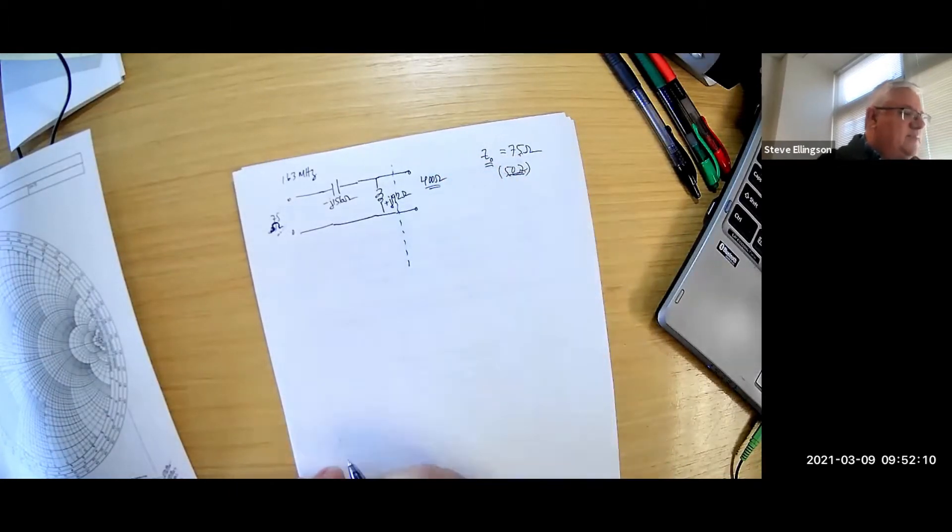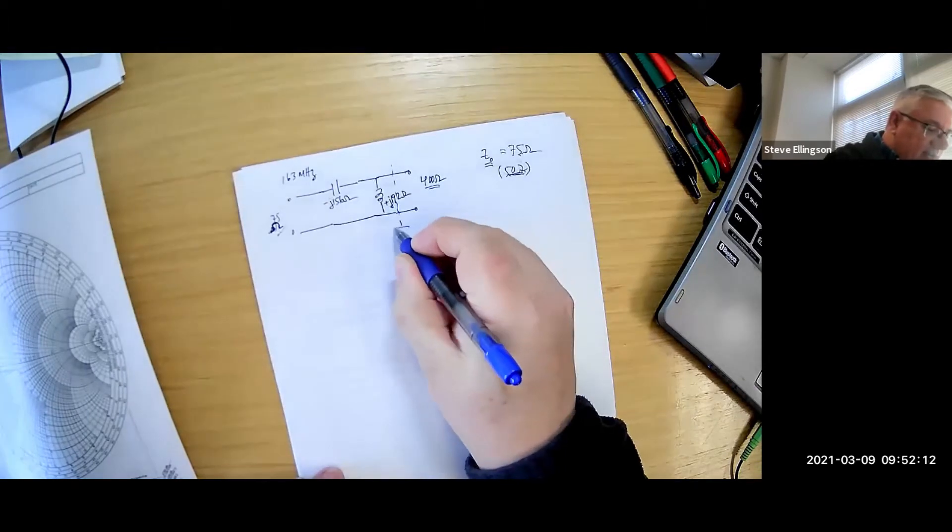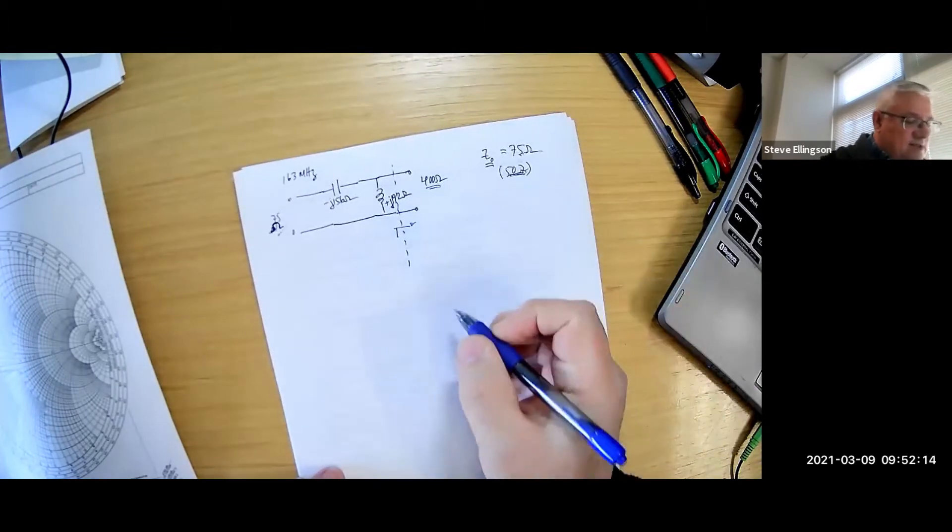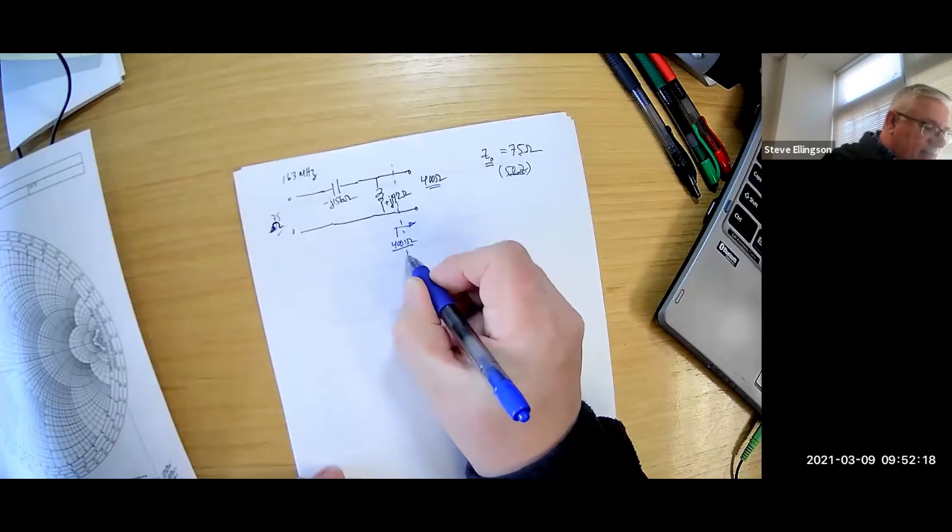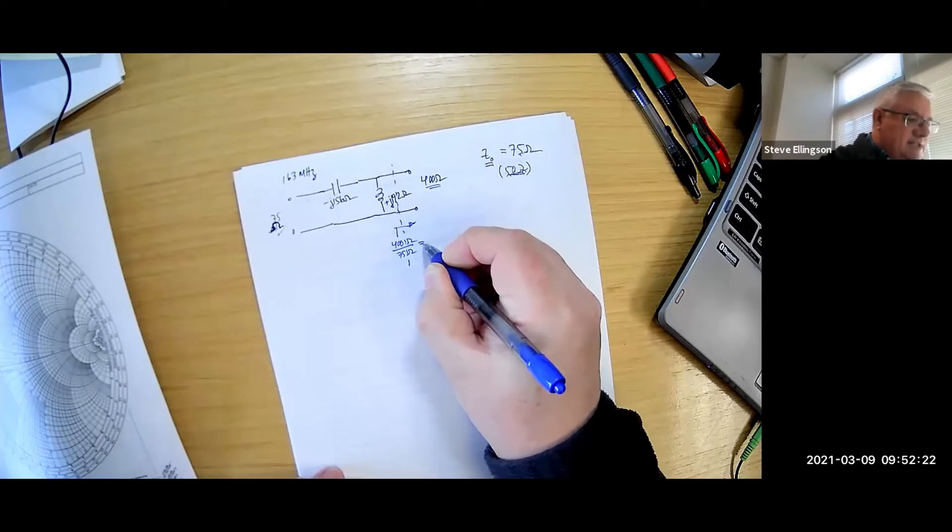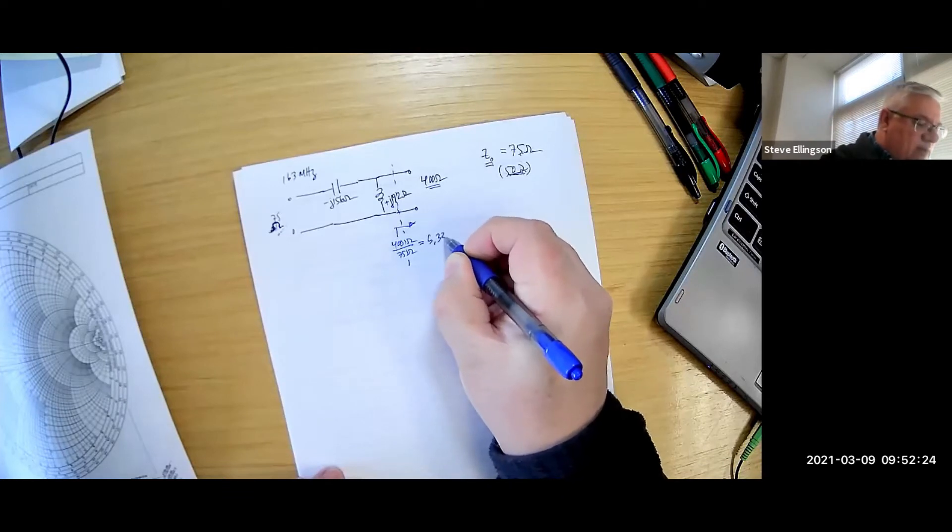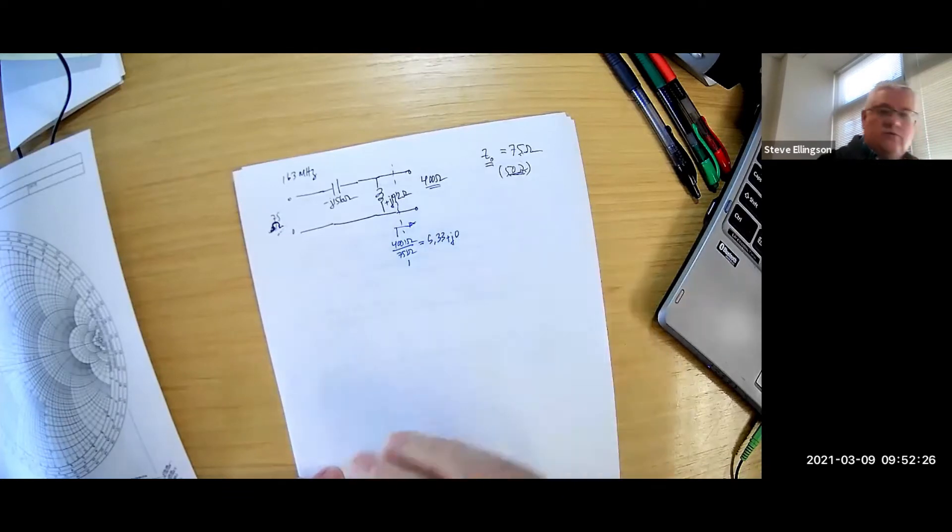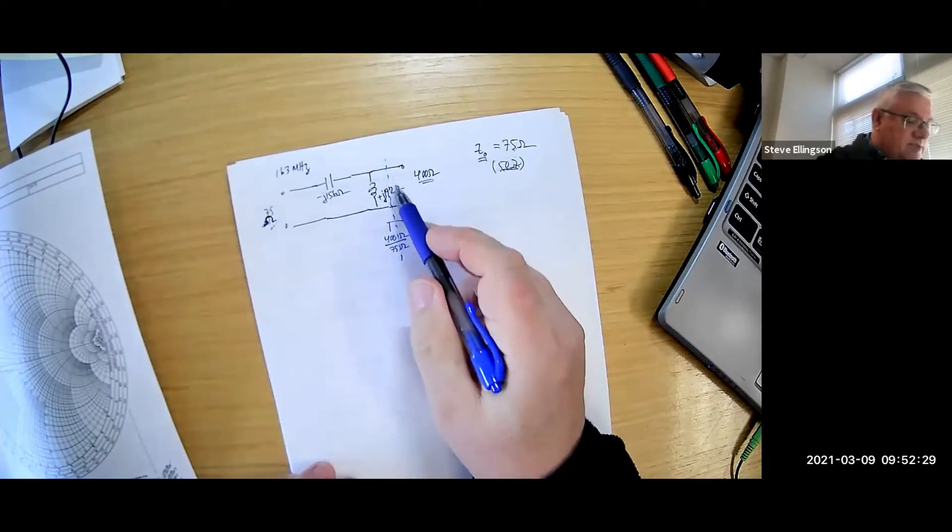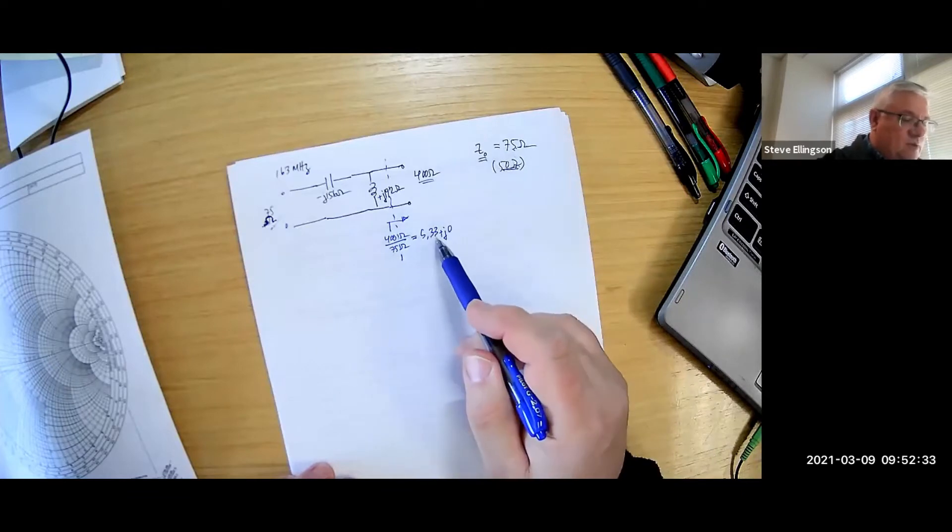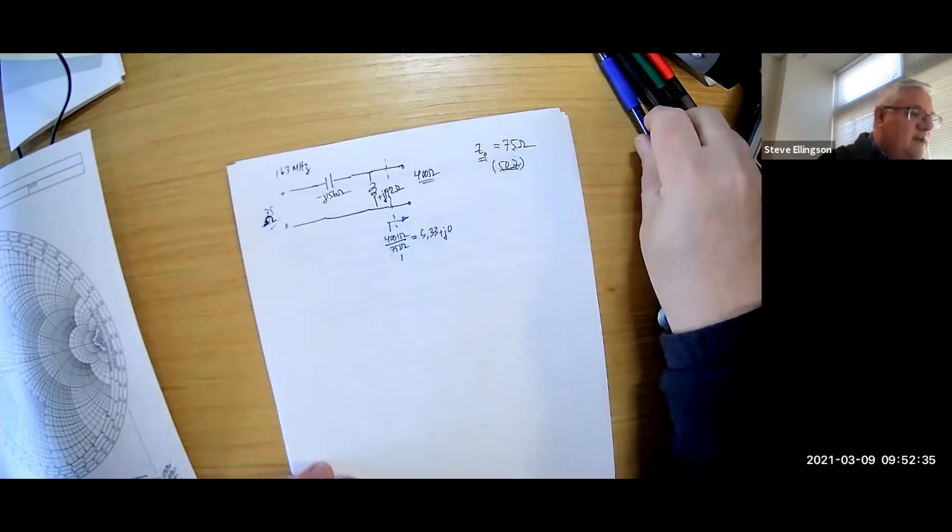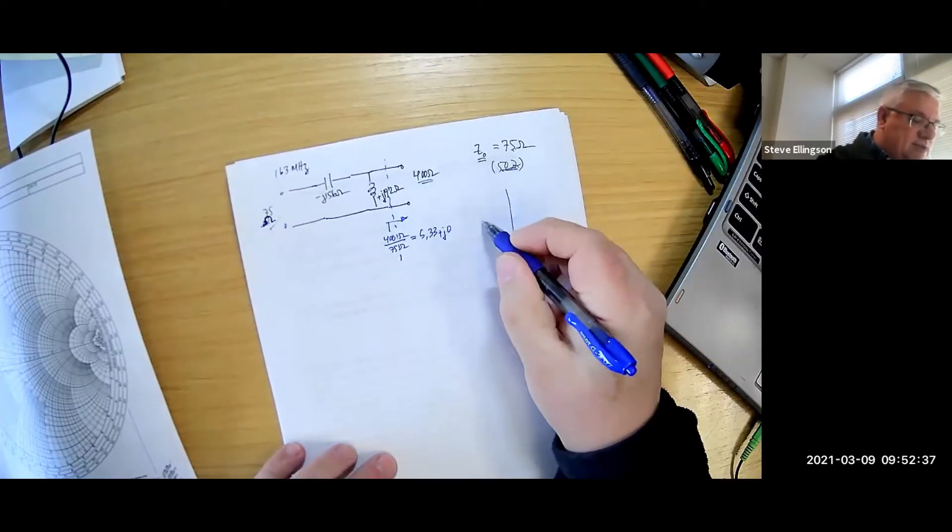If I look at the load impedance here or the output impedance supposed to be 400 ohms, I can calculate this as a normalized impedance that would be 400 ohms divided by 75 ohms, which is a normalized impedance of 5.33 plus j0 unitless. So in terms of Smith chart stuff I think of this as being a normalized impedance 5.33 plus j0, and if I were to plot that on the Smith chart.